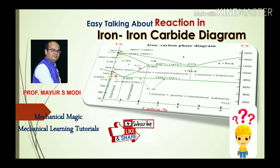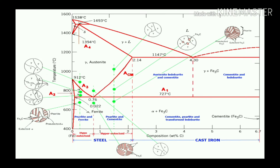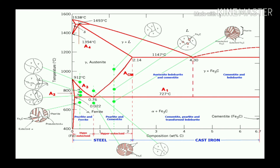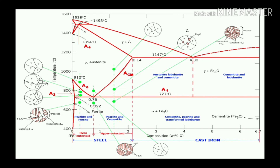Welcome to my YouTube channel, Mechanical Magic Mechanical Learning Tutorials. In this video I am talking about the different kinds of reactions in the iron-carbon diagram. Basically, three kinds of reactions take place in the iron-carbon diagram. I already have the diagram here — in my previous tutorial I covered how to draw the iron-carbon diagram, so right now I'm just taking the diagram and talking about the different reactions.